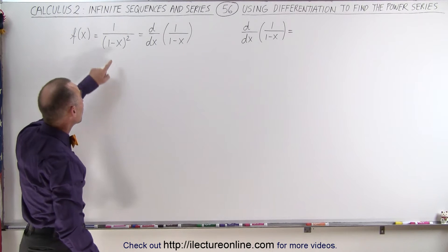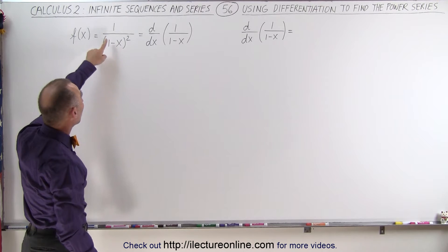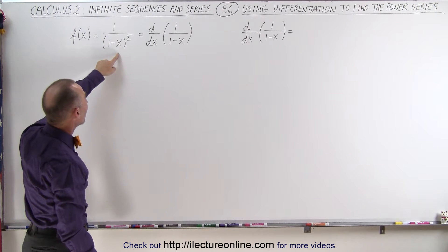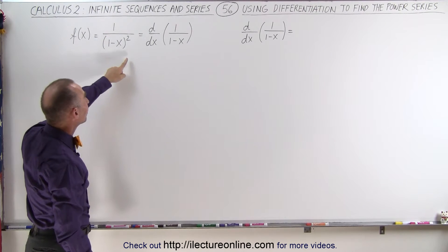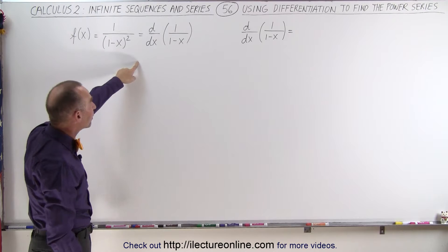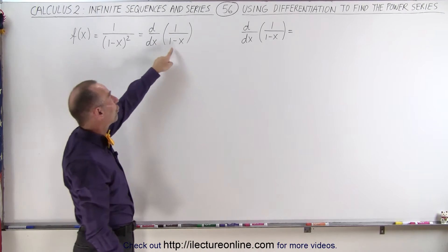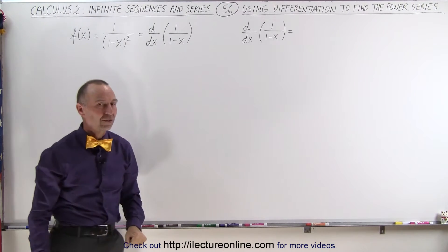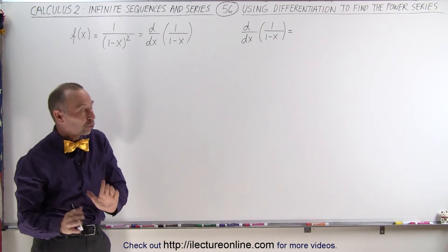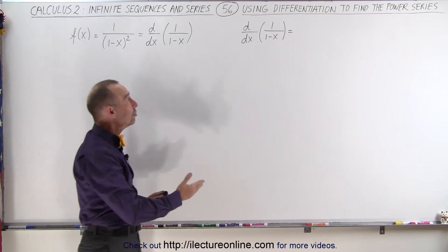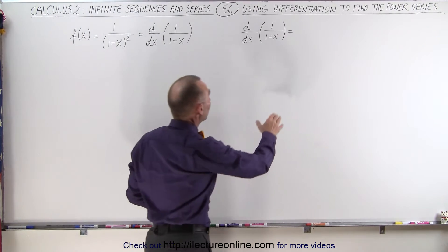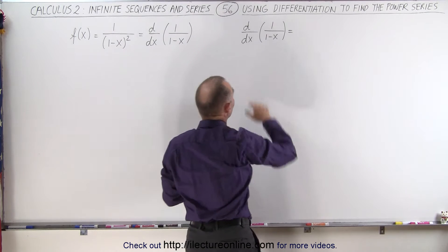In other words, we know that 1 over 1 minus x squared is equal to the derivative of 1 over 1 minus x. If you're not sure, let's go ahead and do that — we'll take the derivative of this.